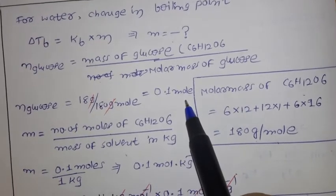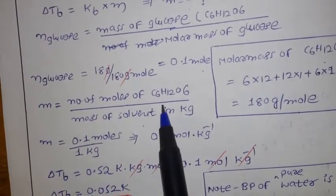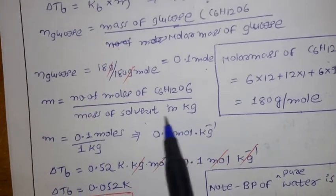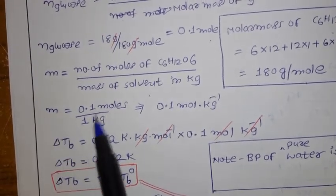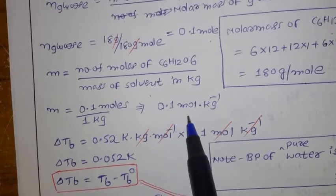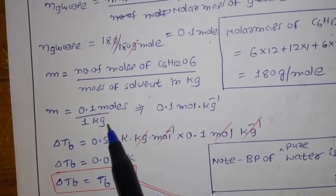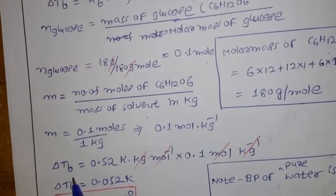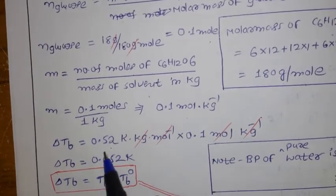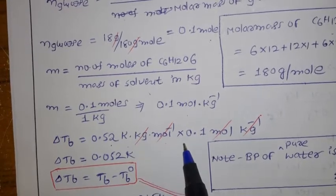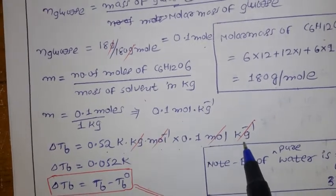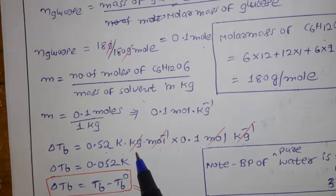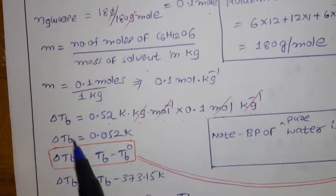Molality = number of moles of solute / mass of solvent in kg = 0.1 mol / 1 kg = 0.1 mol per kg. Now substituting in the formula: ΔTb = Kb × molality = 0.52 kelvin·kg/mol × 0.1 mol/kg. The units cancel, giving ΔTb = 0.052 kelvin.